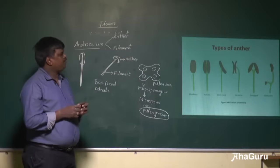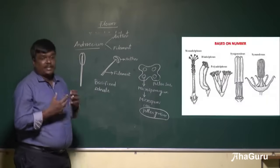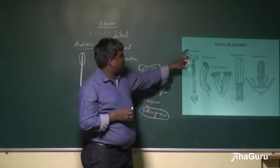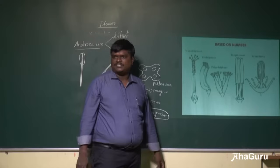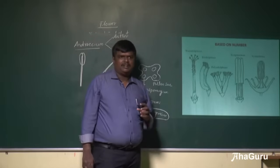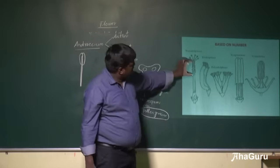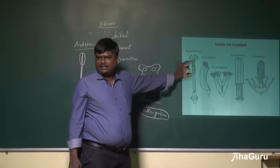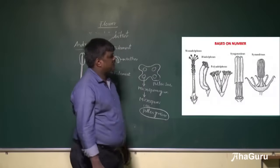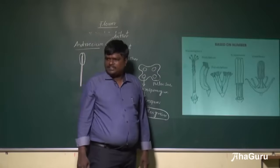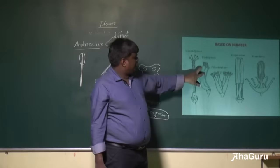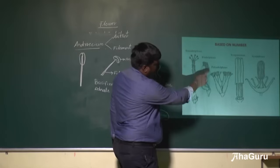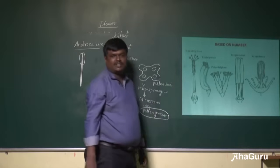Next are the types of anther based on number. The first is monadelphous — mono means single, adelphous means bundle. If all the anthers and filaments are present in a single bundle, it is called monadelphous. Then diadephous, where they are present in two bundles.